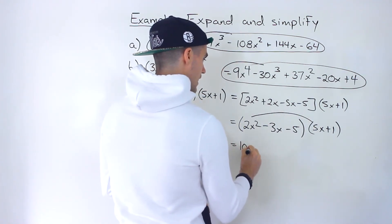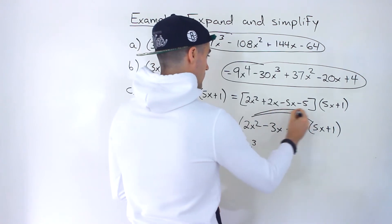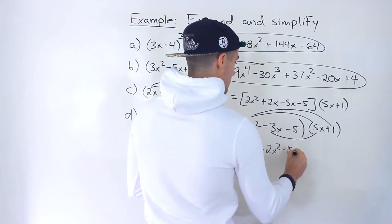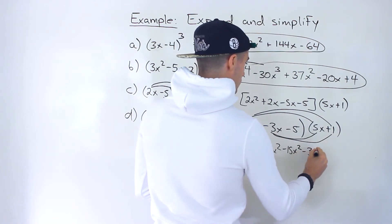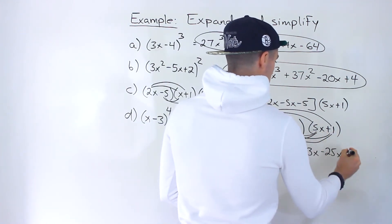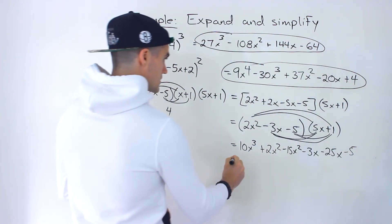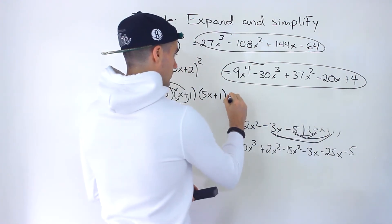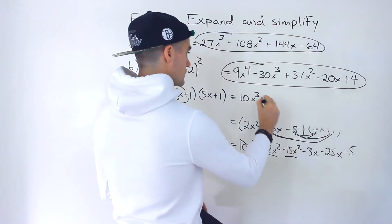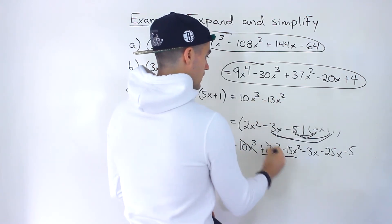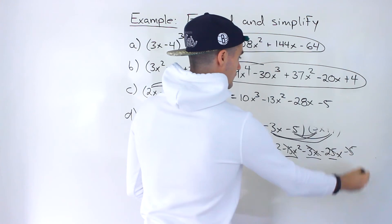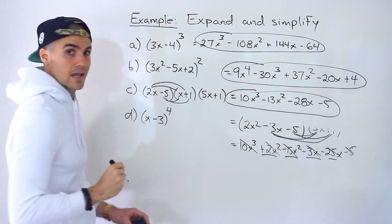Now we multiply those two brackets. 2x squared times 5x gives 10x cubed. 2x squared times 1 gives 2x squared. Negative 3x times 5x gives minus 15x squared. Negative 3x times 1 gives negative 3x. Negative 5 times 5x gives negative 25x. Negative 5 times 1 gives negative 5. Simplifying: 10x cubed, then 2x squared minus 15x squared gives negative 13x squared, then negative 3x minus 25x gives negative 28x, then minus 5. That's the answer for part c.